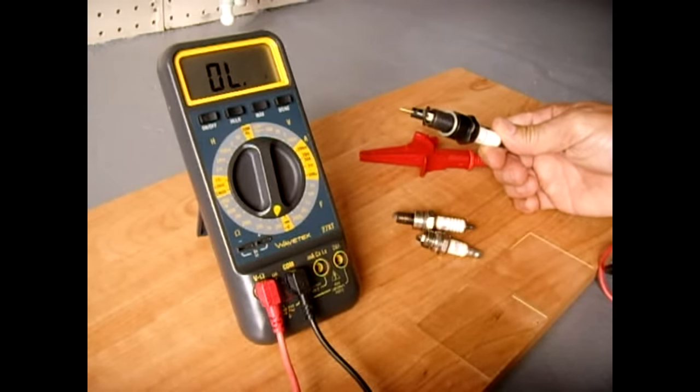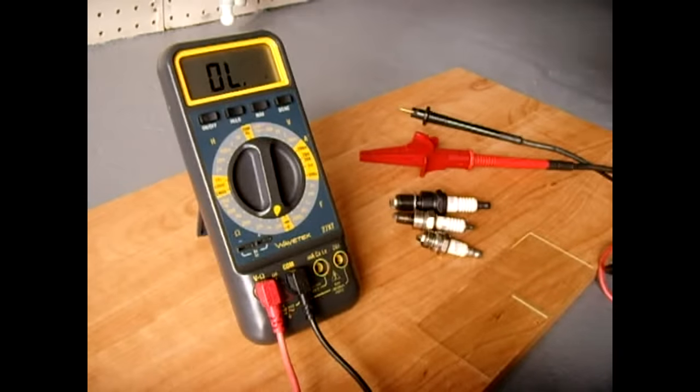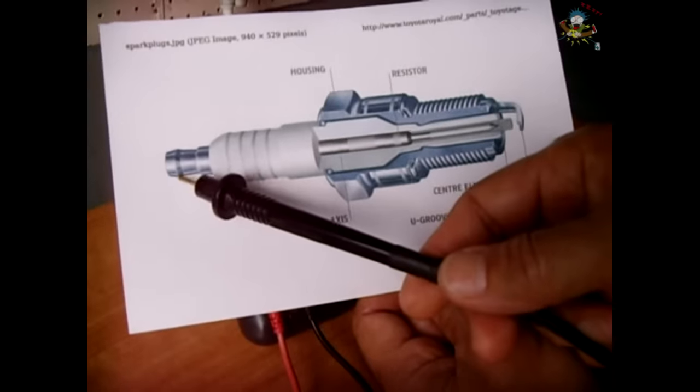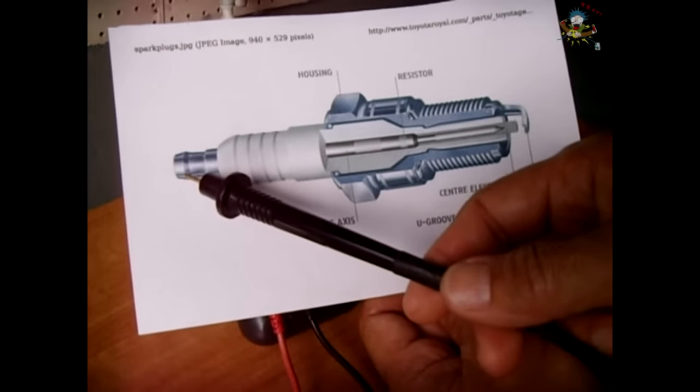Now before we get started we're just going to take a quick look at the inside of a spark plug with this image right here. You see the insulator on the spark plug and you have the end where the spark plug boot would snap onto.